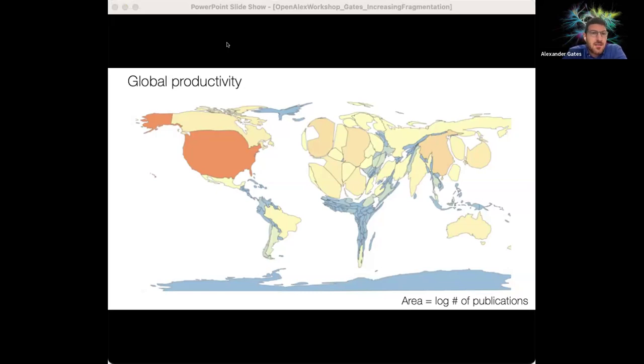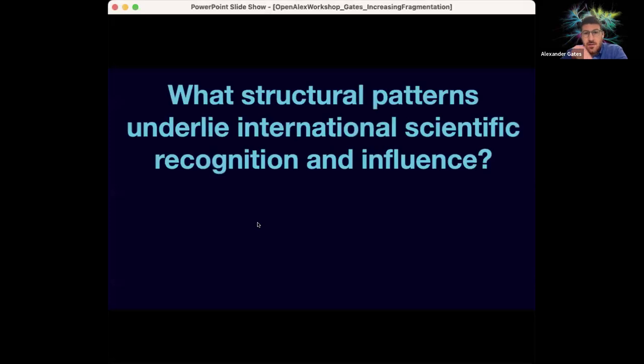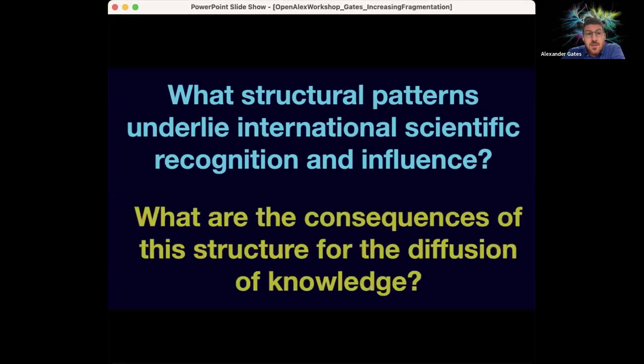So here we sized each country based on the log number of publications. And you see by far it's Western-centric, right, focused on just a few nations who are producing most of scientific knowledge. And so this leads us into our major questions here, which is what are the structural patterns that actually underlie international scientific recognition and influence? And do they have consequences for the diffusion of knowledge across national boundaries?